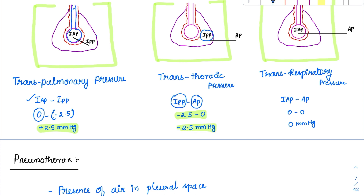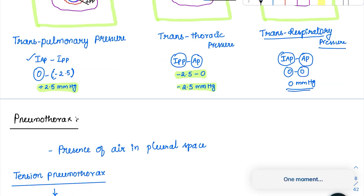Transrespiratory pressure covers the entire respiratory system — both the lung and chest wall. It is the pressure difference between the innermost pressure (intra-alveolar) and the outermost pressure (atmospheric).